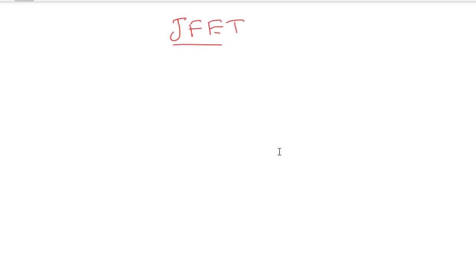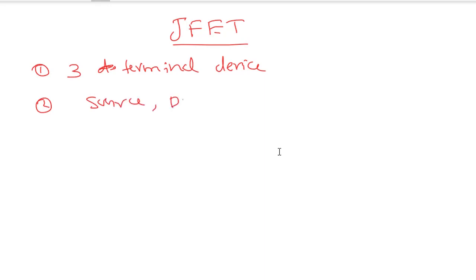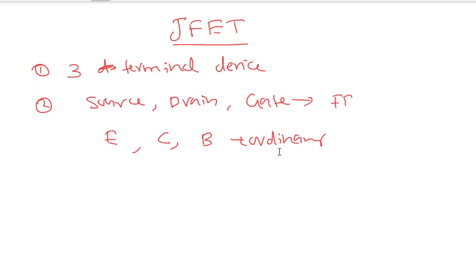For the time being, let us consider a JFET. If you consider a JFET, it is a three terminal device just like a transistor. We call these three terminals as source, drain, and gate — just like emitter, collector, and base in an ordinary transistor. Here in FET, we have source, drain, and gate.